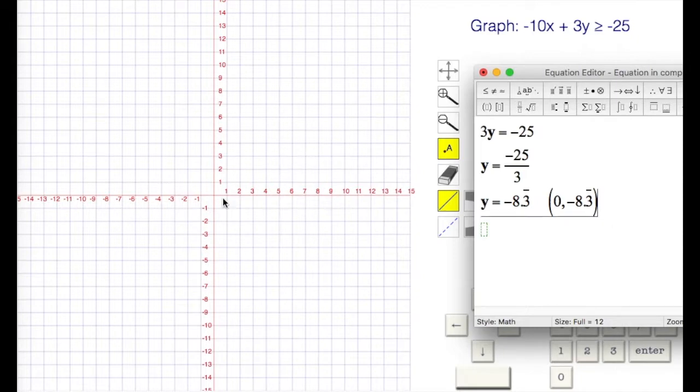We're going to find the x intercept. So to do that, we're going to set y equal to zero. We're going to be left with negative 10x is equal to negative 25. Negative 10x is equal to negative 25.